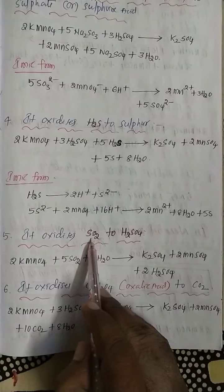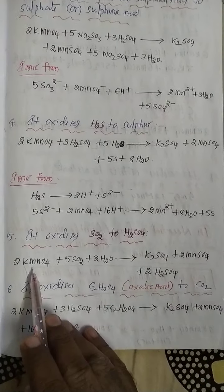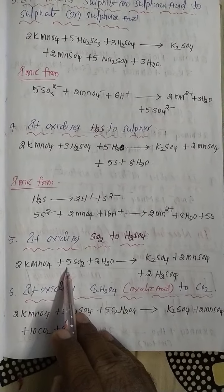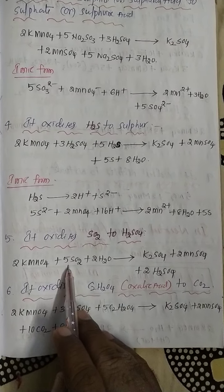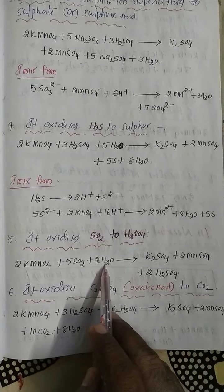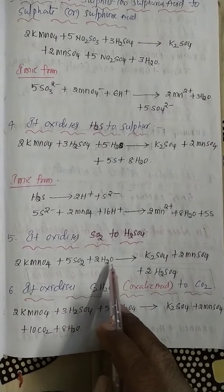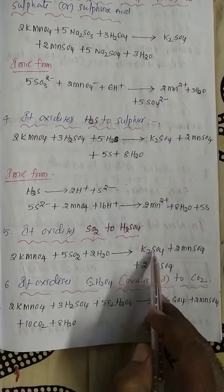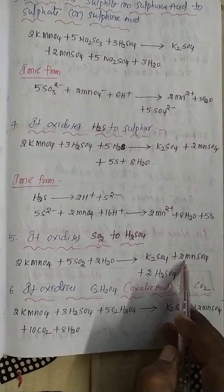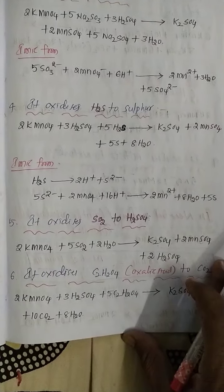The fifth reaction: KMnO4 oxidizes sulfur dioxide to sulfuric acid. KMnO4 plus 5SO₂ plus water — note that sulfuric acid is not added here. The products are K₂SO₄ plus 2MnO₄ and sulfuric acid is formed.